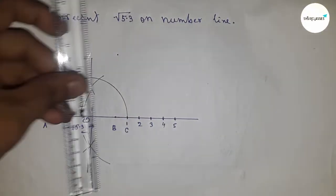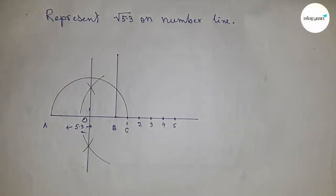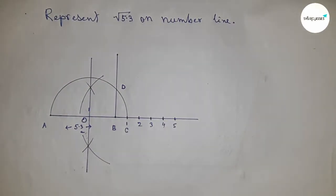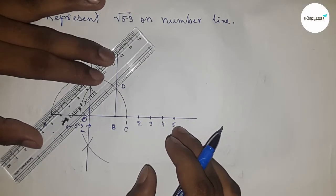Next, joining this to get the 90-degree which cuts the semicircle at point D. Next, joining the center O and D to get the radius OD. So joining this, we got the radius OD.